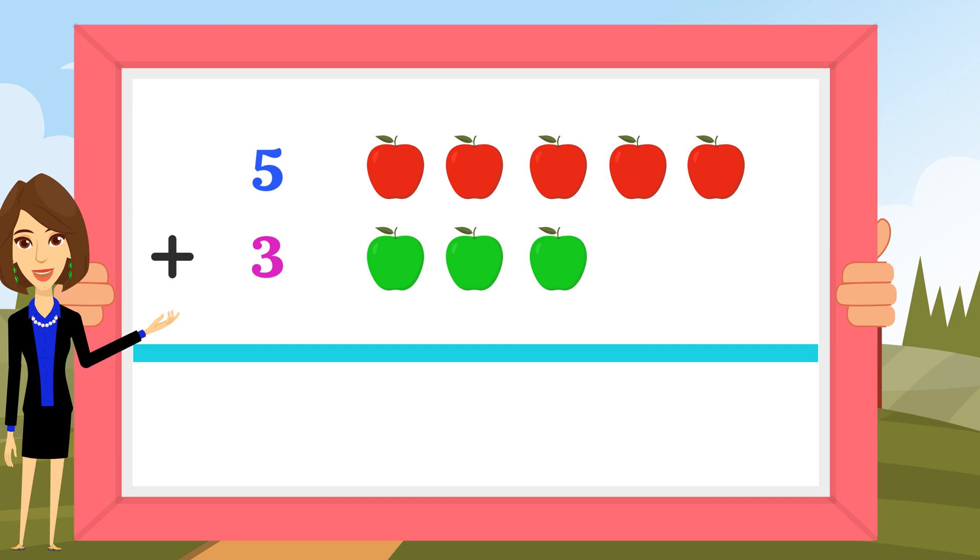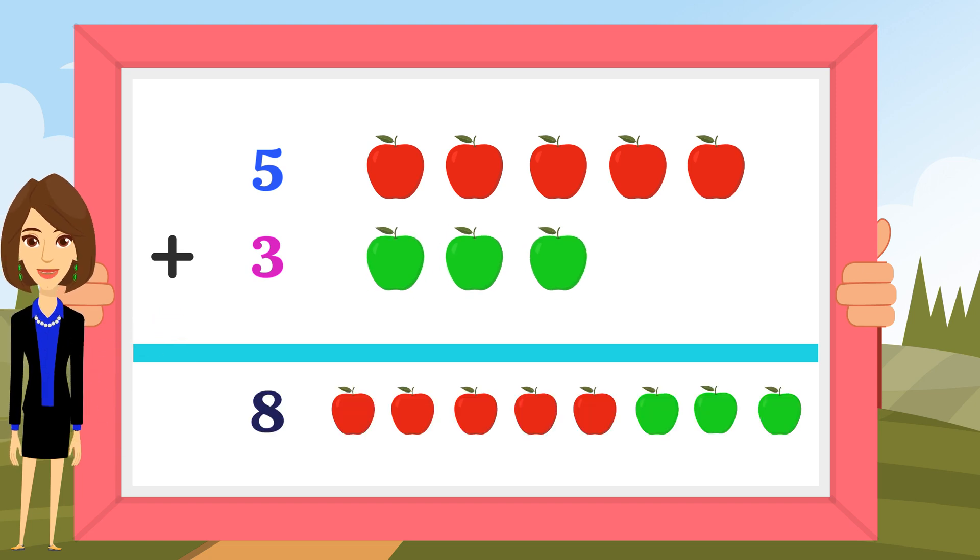So all together they sum one, two, three, four, five, six, seven, eight. There are eight apples. Adding up five plus three gives you eight.